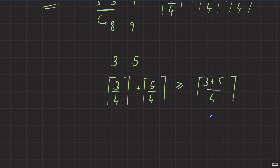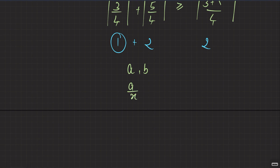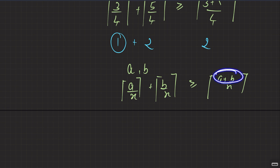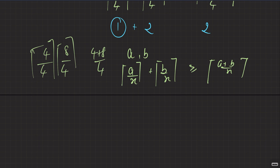Why? Because adding two numbers might make the result divisible by x. For example, 3 by itself: ceil(3/4) = 1. But 3 + 5 = 8, and 8/4 = 2 — wait, that gives a larger number here. The key point is: ceil(a/x) + ceil(b/x) >= ceil((a+b)/x). The equals-to case comes when a and b are both divisible by x; otherwise you always get a gain on the left side. Adding elements can only reduce or maintain the sum of ceils, never increase it.